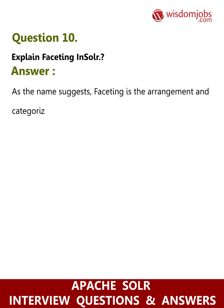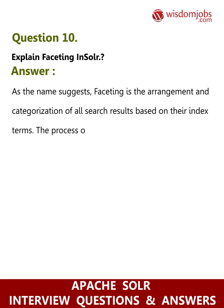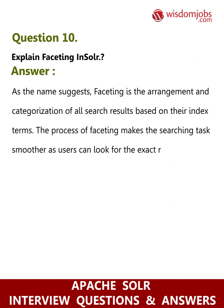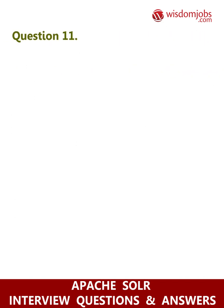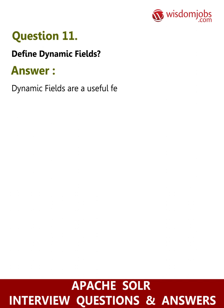Question 10: Explain faceting in Solr. Answer: As the name suggests, faceting is the arrangement and categorization of all search results based on their index terms. The process of faceting makes the searching task smoother, as users can look for exact results.